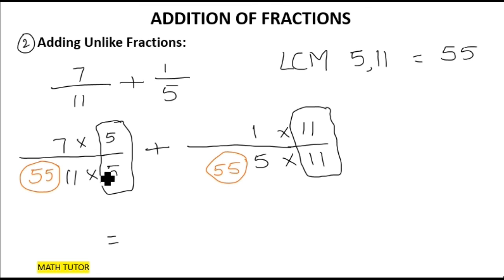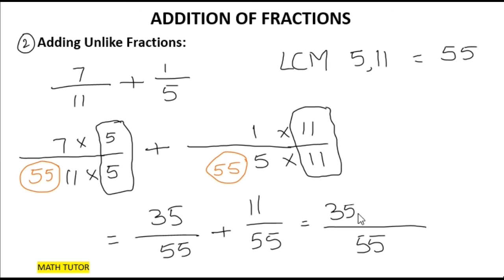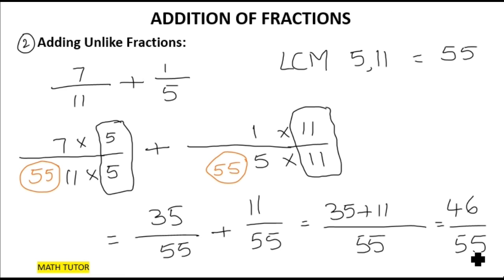After doing this step, it's very easy. Seven times five is thirty-five, and eleven times five is fifty-five. One times eleven is eleven, and five times eleven is fifty-five. Since the unlike fractions have become like fractions with the same denominator, keep the denominator fifty-five and just add both numerators: thirty-five plus eleven equals forty-six by fifty-five. Kids, I hope you understood adding fractions. If you have any doubts, you can message me. Thank you for watching!